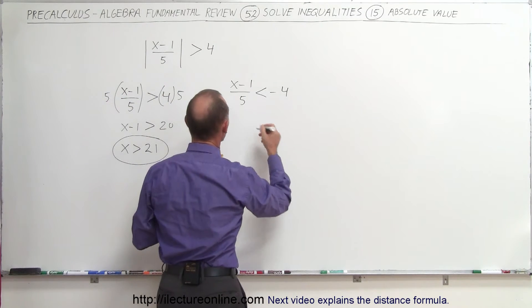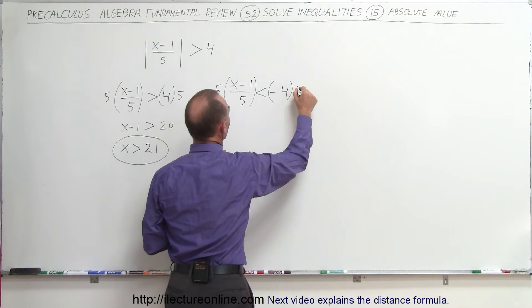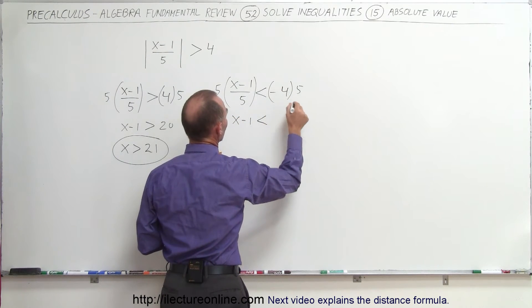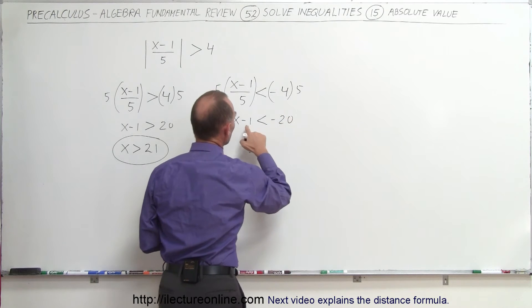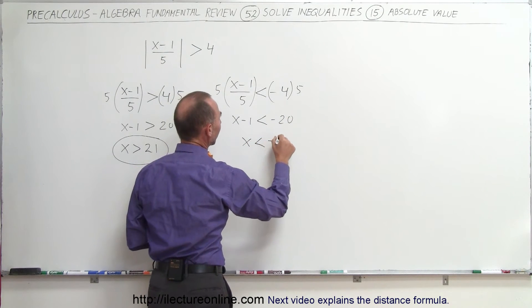So again, multiply both sides by 5. What we get here is x minus 1 less than minus 4 times 5, which is minus 20. Move the negative 1 across here, we get x is less than minus 19.